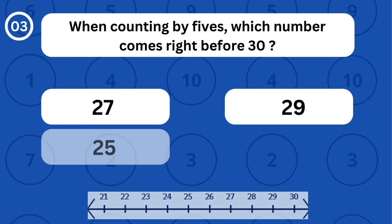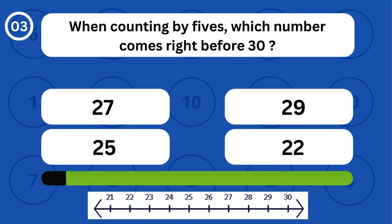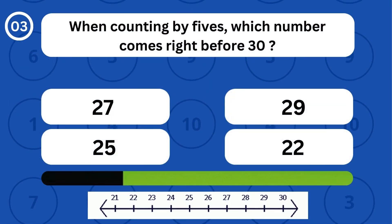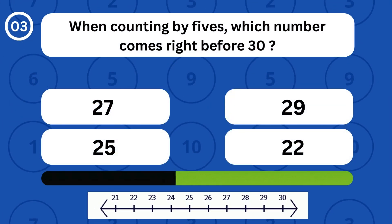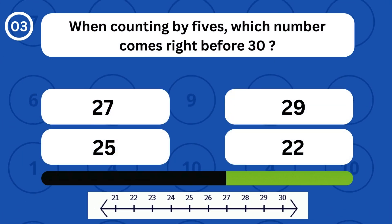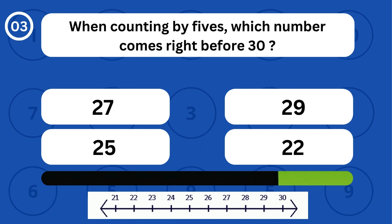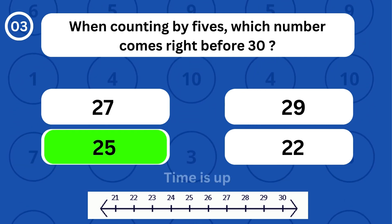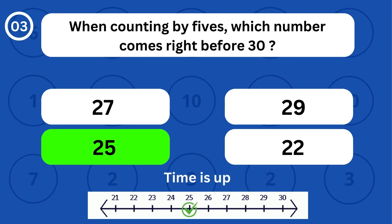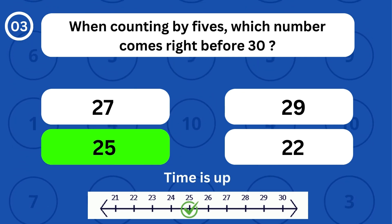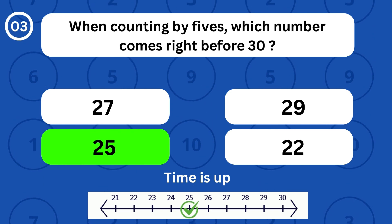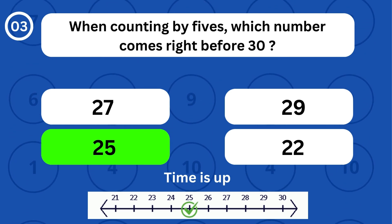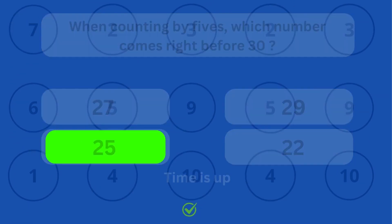When counting by fives, which number comes right before 30? When counting by fives, the number 25 comes right before 30.